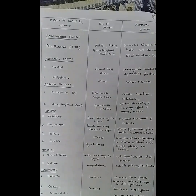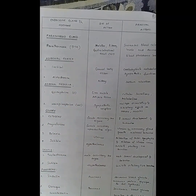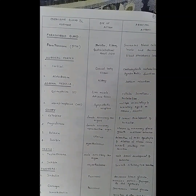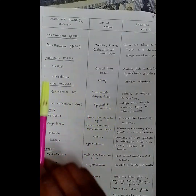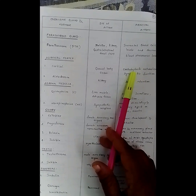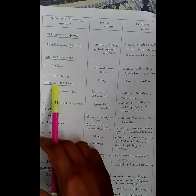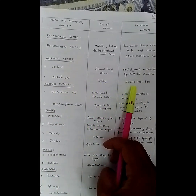Parathormone, which is secreted by the parathyroid gland — its site of action is in the skeleton, kidney, and gastrointestinal tract — is helpful in increasing blood calcium levels and decreasing blood phosphorus levels. Hormones secreted by the adrenal cortex are cortisol and aldosterone. Cortisol's site of action is in the general body tissue and is helpful in carbohydrate metabolism and sympathetic function. Aldosterone is released into the kidney and is helpful in sodium retention.